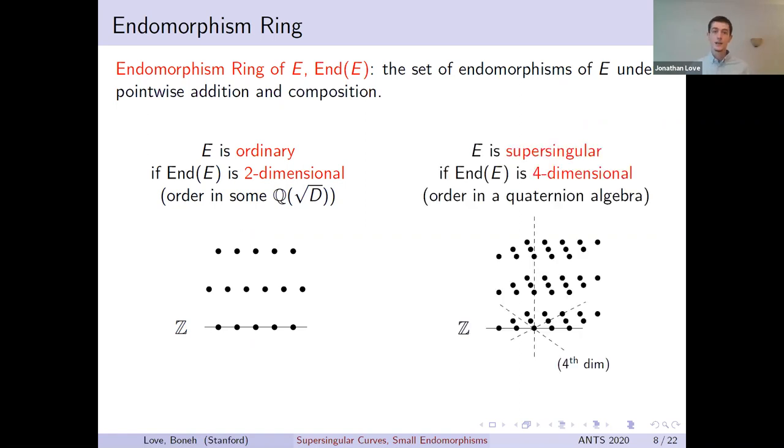On the other hand, the endomorphism ring could be a four-dimensional lattice, specifically an order in a quaternion algebra. In this case, the endomorphism ring is not commutative, and we call E supersingular. The lattice structure of the endomorphism ring carries some important information, because the degree is a quadratic form on endomorphisms that agrees with the usual norm on the quadratic field or the quaternion algebra in question. This allows us to talk meaningfully about long and short endomorphisms. Now, as you'll soon see, this dichotomy between ordinary and supersingular curves will determine a lot about the nature of isogenies between the curves.